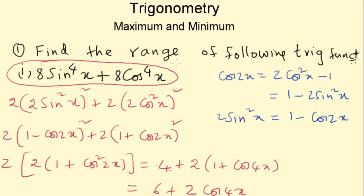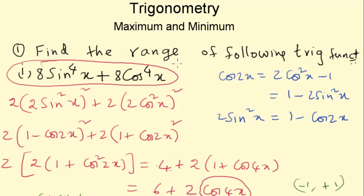Let's find the range, which is the max and min. What is the max and min for cos 4x? The max and min for cos 4x would be plus or minus 1. If cos 4x is minus 1, this whole term would be 6 plus 2 times minus 1, which is 6 minus 2 equals 4. When cos 4x is plus 1, we get 6 plus 2 equals 8. So the range of this function is [4, 8].